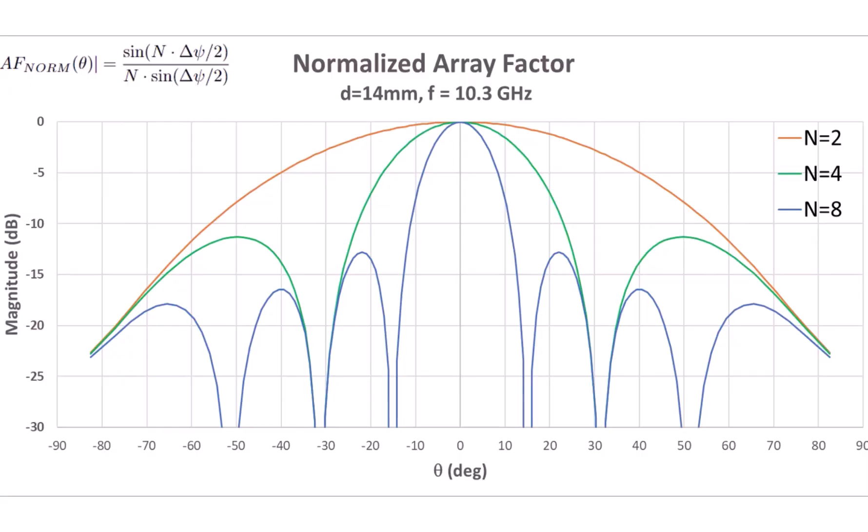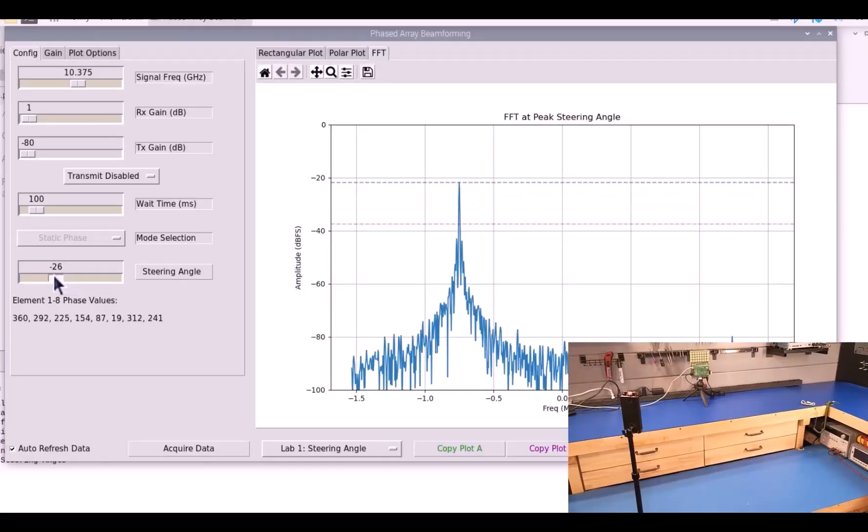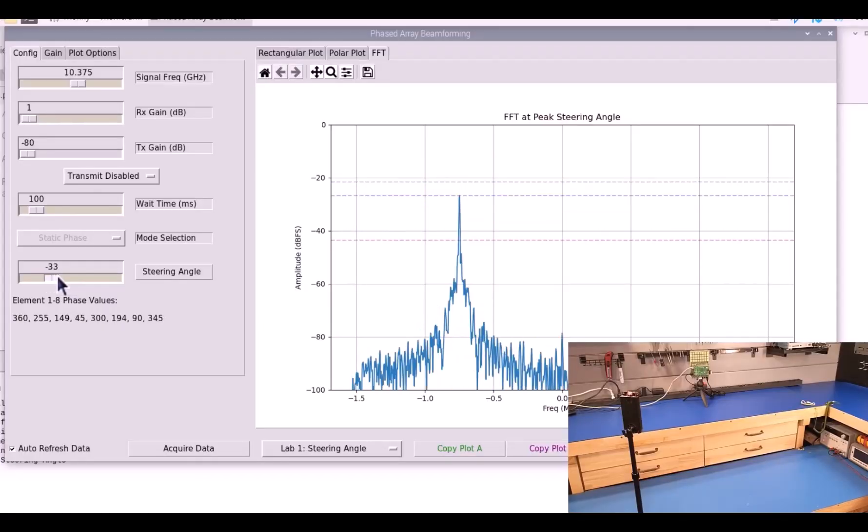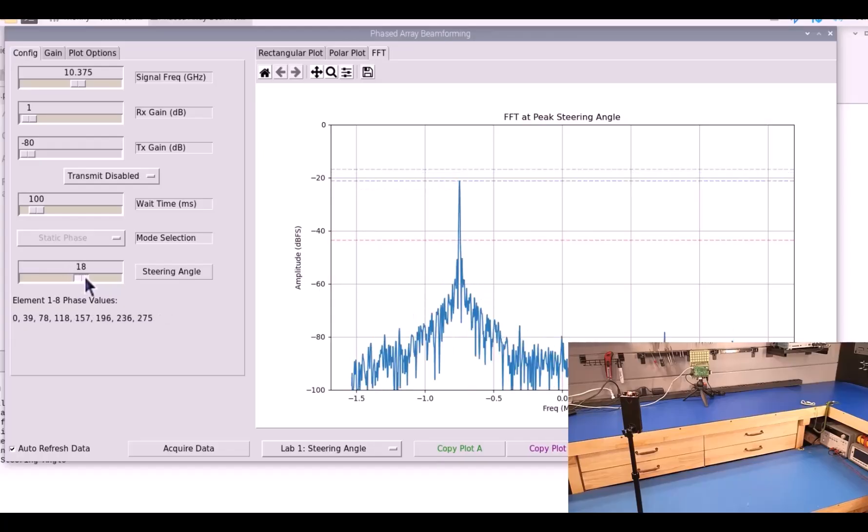And as the number of elements increases, the number of side lobes and nulls also increases. We saw these side lobes and nulls in the last video when we were looking at the received gain, and we swept the steering angle. And now the origin of them from that equation is apparent. And these side lobes are a problem, so we'll want to learn some methods to deal with them.